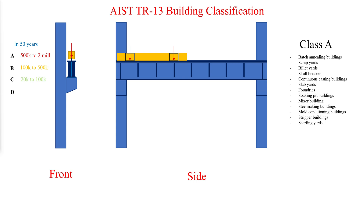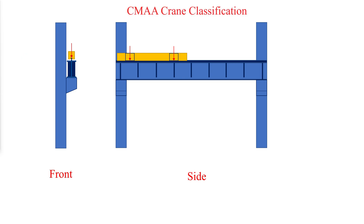Class C is a building in which members may experience a repetition of 20,000 to 100,000 cycles of a specific loading during the expected life of a structure, or 1 to 5 repetitions per day. The next step is to classify the cranes.